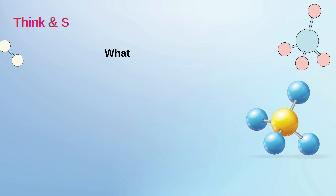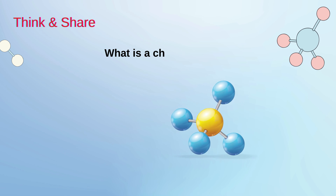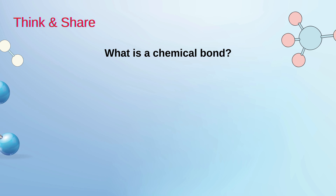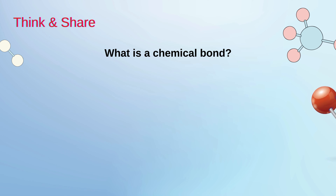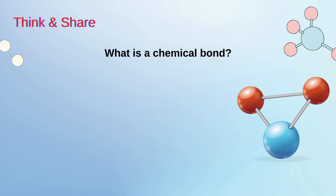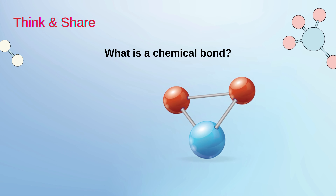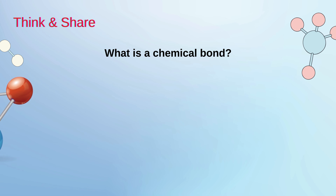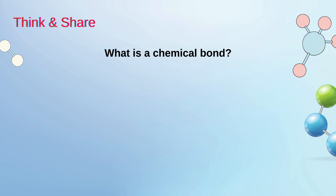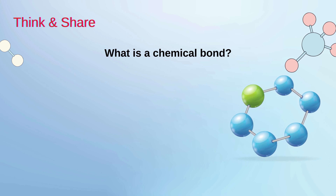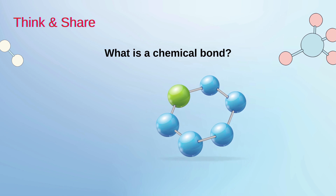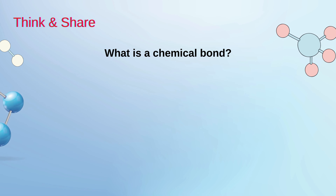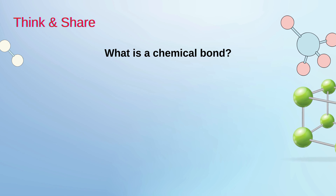What is a chemical bond? Chemical bond kia hota hai? By definition, a chemical bond is defined as the force of attraction between atoms that holds them together in a substance. In other words, during bond formation, there is some force which holds the atoms together.